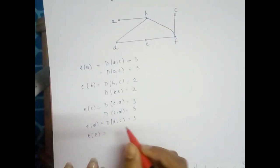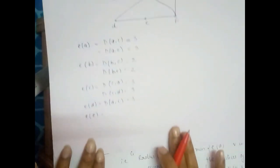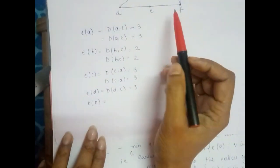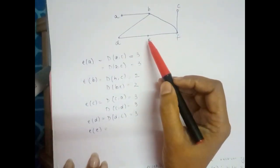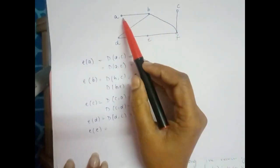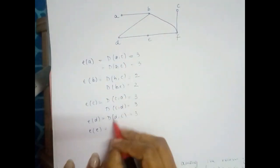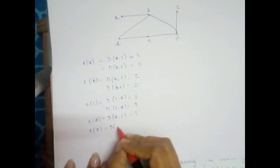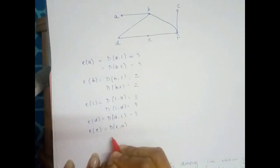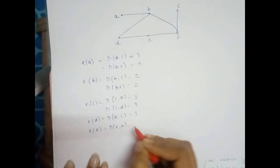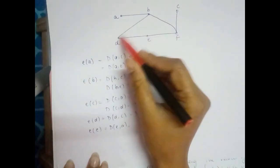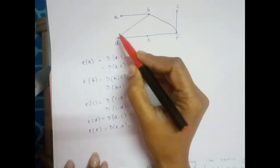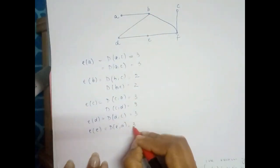For eccentricity of vertex e, we take far vertices such as a and c. Distance e to a: e to d, d to b, b to a gives 3 edges. Other vertices are closer, so the eccentricity of e is 3.